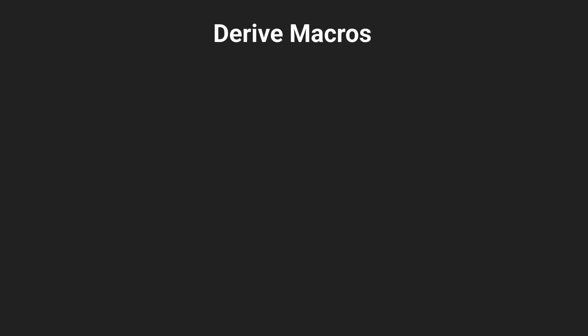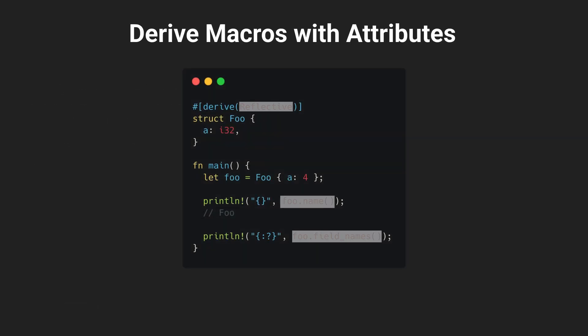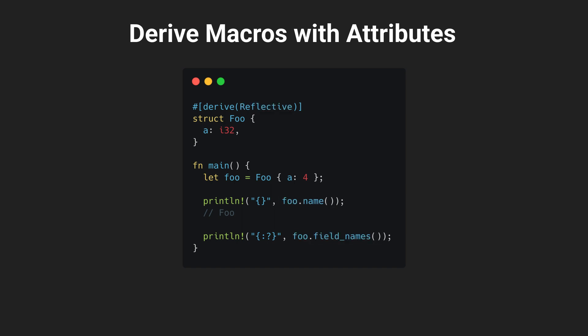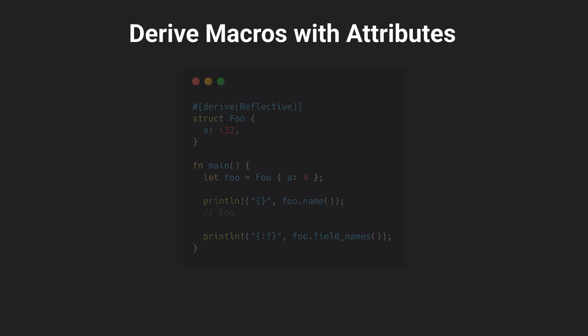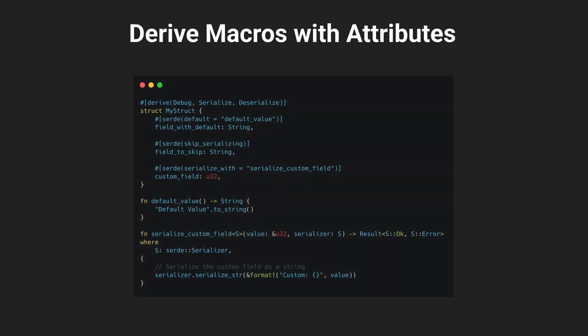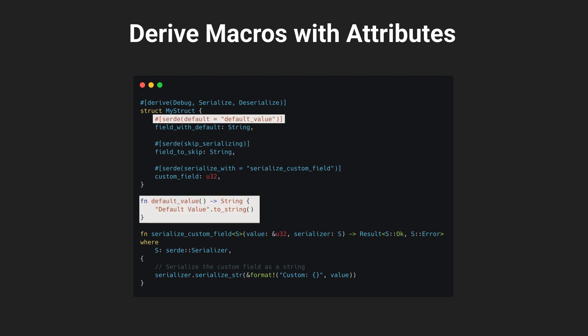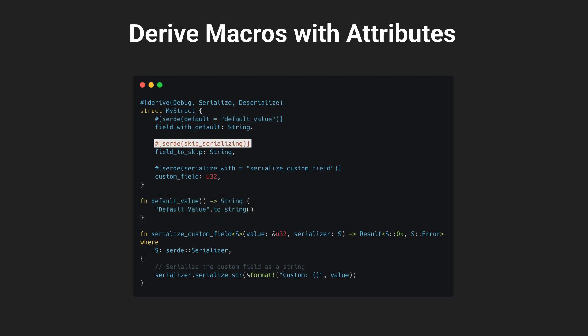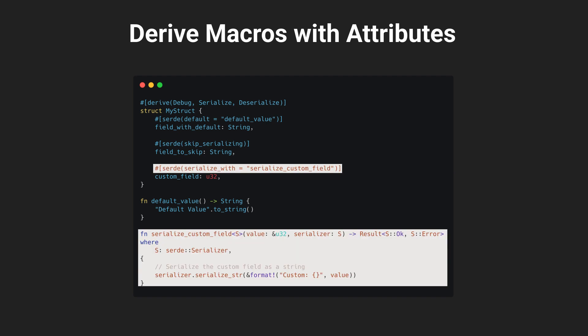In the last video, we dealt with a very basic example for a derived macro. But sometimes derived macros might require some attributes to extend their behavior. For example, Serde, the most popular serialization library in Rust, utilizes attributes to do a couple of things, such as defining a default value for a field, skipping it altogether, or defining a custom serialization logic for a specific type of field.